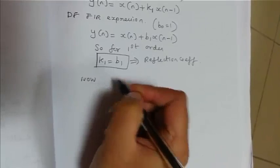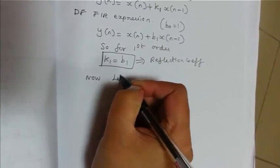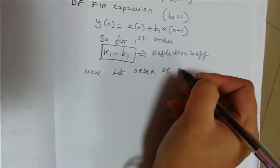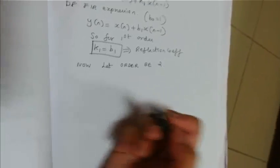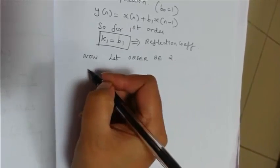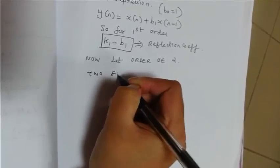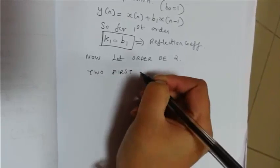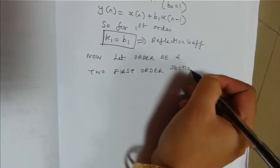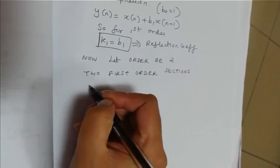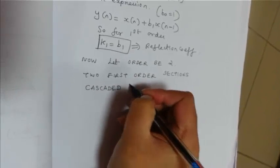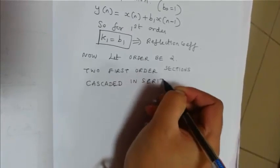Now what we do is, we'll try the same thing for a second order FR filter. How do we actually obtain the lattice structure for second order? We have to cascade two first order lattice structures in series to obtain the second order lattice form for FR filter implementation.